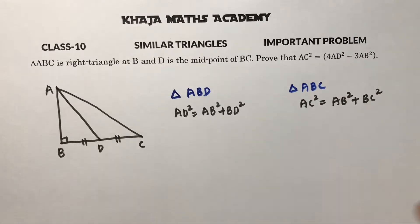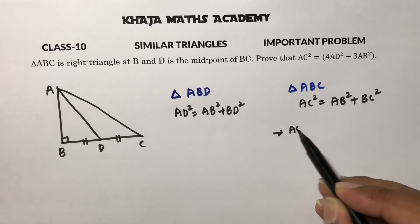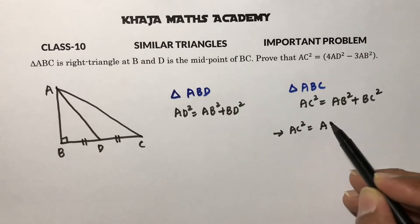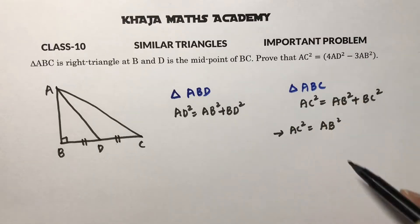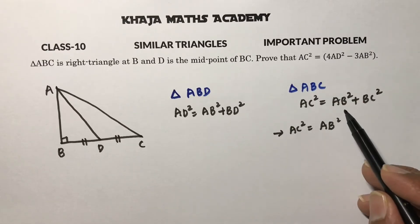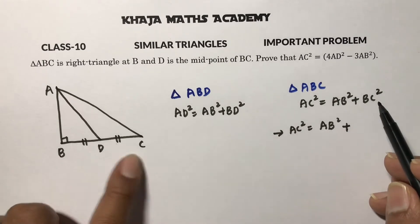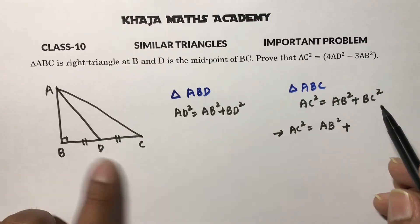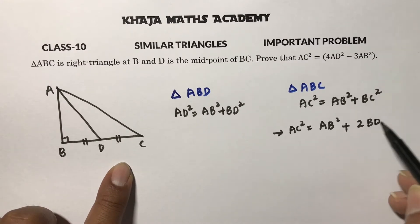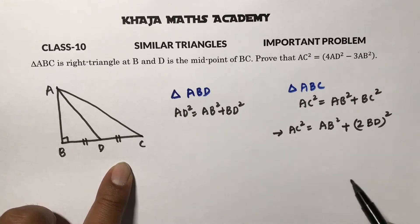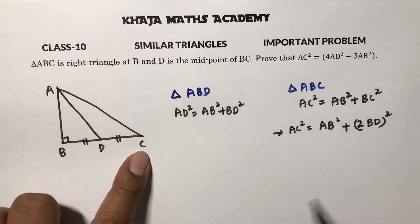Now take triangle ABC — the hypotenuse is AC. So AC² = AB² + BC². We need to simplify this further. Since D is the midpoint of BC, we can write BC = 2BD, so BC² = (2BD)² = 4BD².